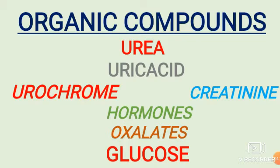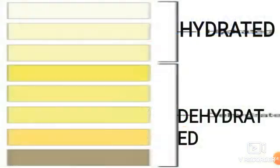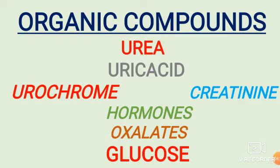Urine consists of about 2.5 percent organic compounds, including urea, uric acid, urochrome, creatinine, some hormones, oxalates, and a very small amount of glucose. Among these, urochrome is responsible for the pale yellow to amber color of urine. Urochrome is formed as a result of the breakdown of hemoglobin in the liver and is excreted through urine.